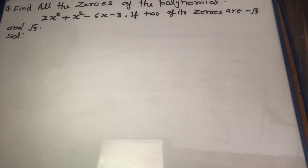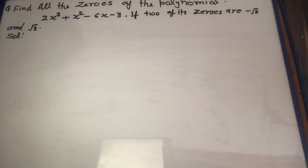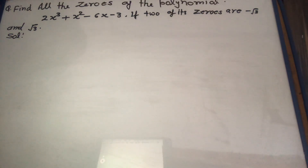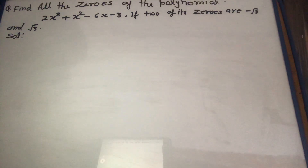First of all, you know about the roots. If a polynomial is given of degree n, then it contains n roots, that is, n zeros. Let us say a polynomial is given of degree 3 — it means this polynomial contains three zeros. But in this question, two zeros are already given. The question is: find all the zeros of the polynomial 2x³ + x² − 6x − 3, if two of its zeros are −√3 and +√3. So, this is the question.